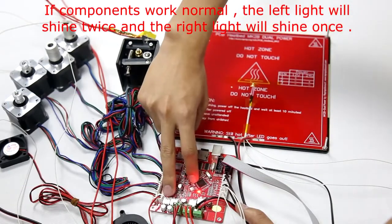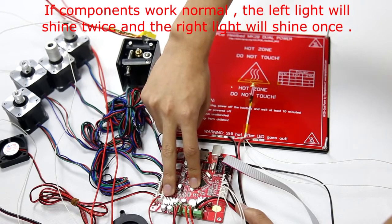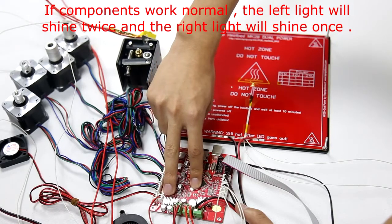If components work normally, the left light will shine twice and the right light will shine once.